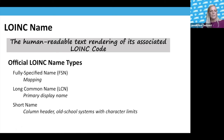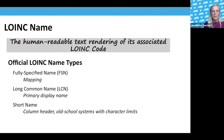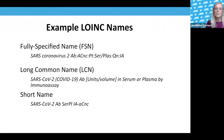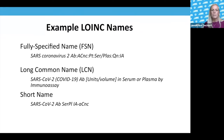We also have consumer names and provider names, but the fully specified name is what we recommend for any mapping. The LOINC long common name is our primary display name, mainly a user-friendly readable name. The short name was historically for systems with character limits and is kept under 40 characters. The fully specified name is each axis of the LOINC term separated by a colon. The long common name and short name are generated names based on those axes.